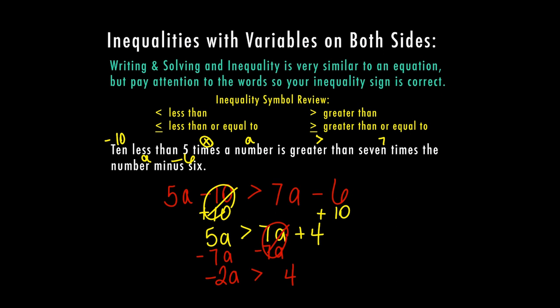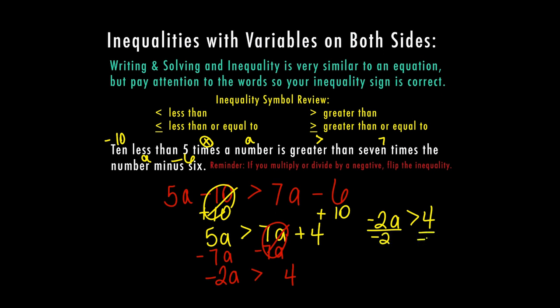Just a reminder: if you multiply or divide by a negative, you have to flip the inequality. So here in our next step, negative 2A is greater than 4. I'm going to divide both sides by negative 2, which means my inequality sign is going to flip. I'm left with A, and 4 divided by negative 2 is negative 2. Therefore, A is less than negative 2 in order to make this a true statement.